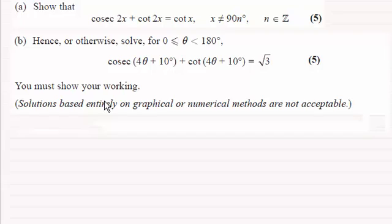So what I'm going to do is we'll just copy the equation down. We've got cosec of 4 theta plus 10 degrees, and that's plus cot of 4 theta plus 10 degrees, and that's equal to root 3.